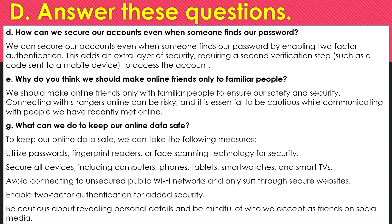E. Why do you think we should make online friends only with familiar people? We should make online friends only with familiar people to ensure our safety and security. Connecting with strangers online can be risky, and it is essential to be cautious while communicating with people we have recently met online. F. What can we do to keep our online data safe? To keep our online data safe, we can utilize passwords, fingerprint readers, or face scanning technology. Secure all devices including computers, phones, tablets, smartwatches, and smart TVs. Avoid connecting to unsecured public Wi-Fi networks and only surf through secure websites. Enable two-factor authentication for added security. Be cautious about revealing personal details and be mindful of who we accept as friends on social media.